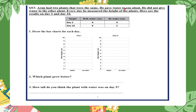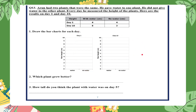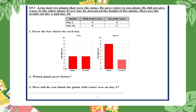Question thirteen: Arun had two plants that were the same. He gave water to one plant and did not give water to the other, and every day he measured their height. On day one, both plants grew four centimeters. On day ten, the plant with water grew eight centimeters, but the plant with no water only grew three centimeters. Every part of a plant needs water, which is absorbed by the roots from the soil. Here you will draw bar charts for each day using the measurements above.